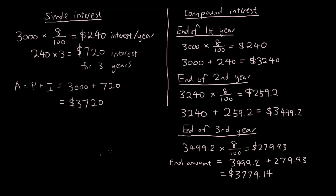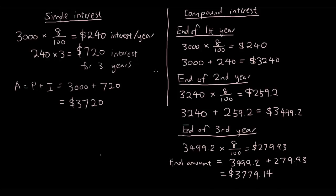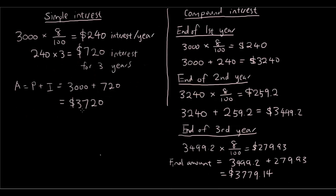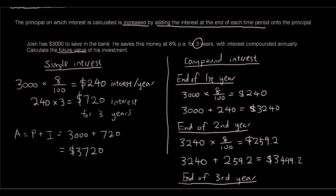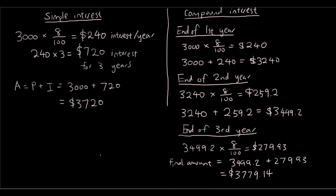So now we've done this question from both the simple interest perspective and the compound interest perspective. Notice how under the same conditions, with simple interest the future value is $3,720, whereas under compound interest we have $3,779. So if you're going to invest money and the interest rate is the same, you want to invest under a compound interest arrangement, because the interest keeps adding on to the principal and at the end you get a bigger amount.